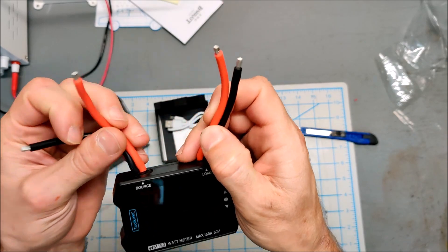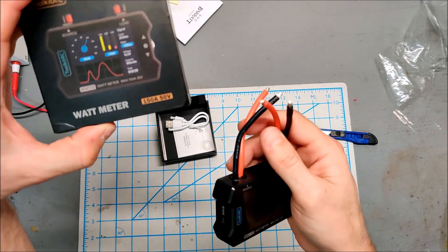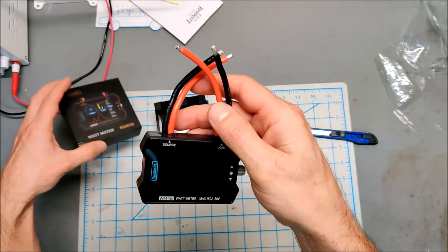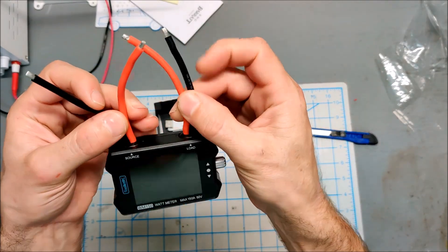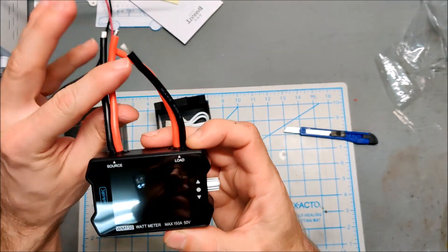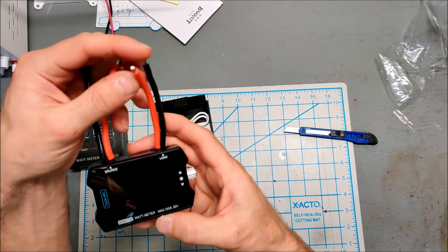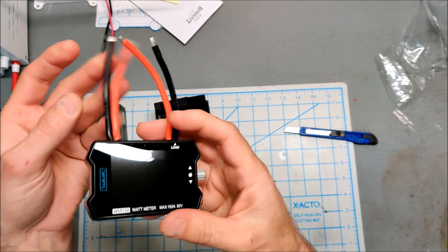There it is. It has a little jog dial for switching screens and stuff like that. This is 12 gauge wire. So it says it's rated for 150 amps, but you probably shouldn't put 150 amps through 12 gauge.